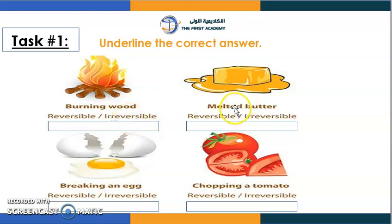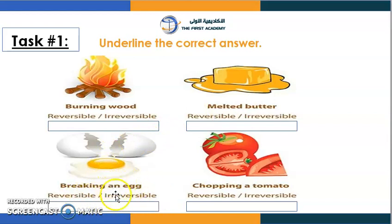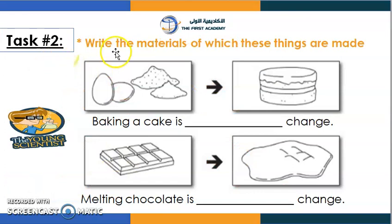Melted butter — is it reversible or irreversible? It's reversible, because you melt it and you can freeze it and it will turn back. Breaking an egg — it's irreversible, because you can't put it back in its shell. Chopping a tomato — it's irreversible, because you can't stick the pieces back together.